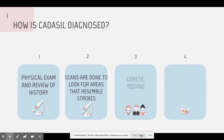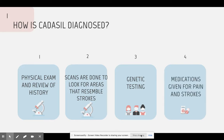If doctors happen to find something in the brain, they usually recommend the patient gets genetic testing done to see if they had that gene passed on to them, or if there is a possibility that they may pass on that gene to their offspring. After testing and scans, the doctor prescribes medications to help with the progressing symptoms and to reduce the chance of the patient suffering from a stroke.